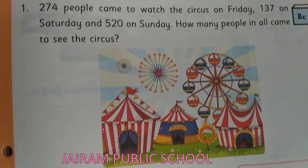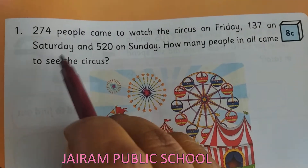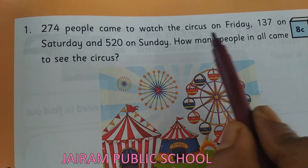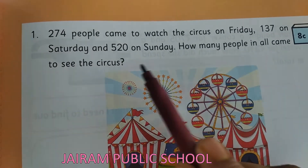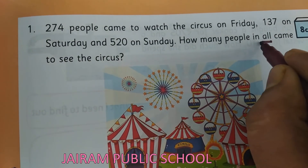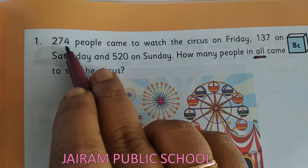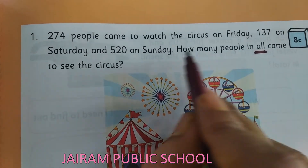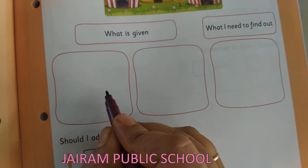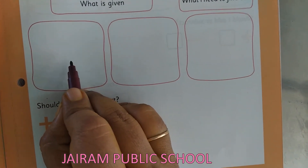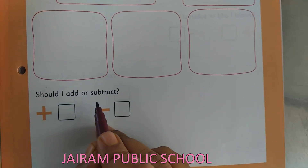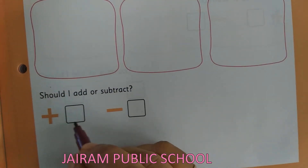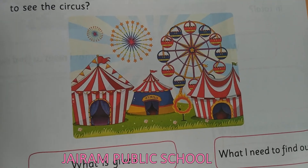Now see Kanna — everyone take your companion book page number 11. HC is the home fun for you. This is also a word problem: 274 people came to watch the circus on Friday, 137 on Saturday, and 520 on Sunday. How many people in all came to see the circus? All means you want to do the addition. On Friday 274, on Saturday 137, on Sunday 520 people came. You want to add — put the tick option and do the calculation. Complete this home fun and upload in the KenciLab. We can see more in the next session. Bye.